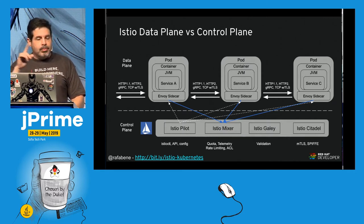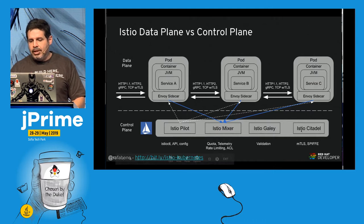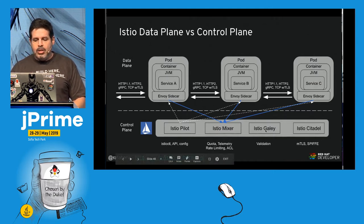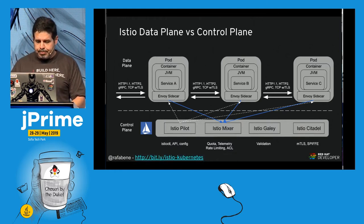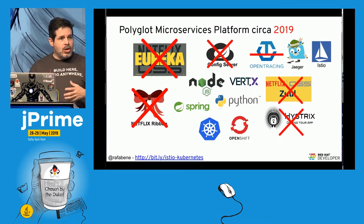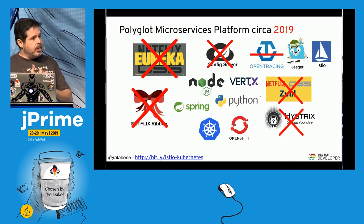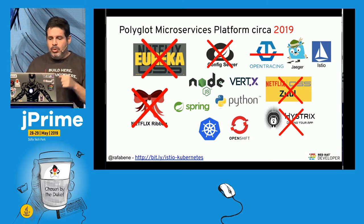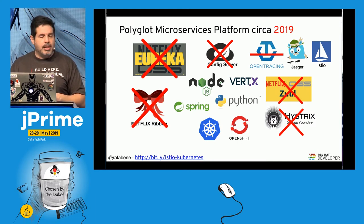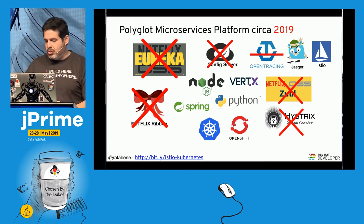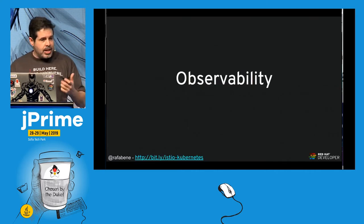Between microservices, you can encrypt communication using digital certificates — that's what Istio Citadel is for. Galley is responsible for validating configuration. So today in 2019, you don't need Eureka, Ribbon, or Hystrix, and you don't need to manually instrument OpenTracing — you get it for free with Istio.